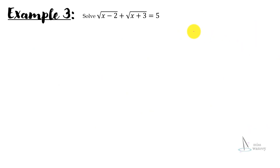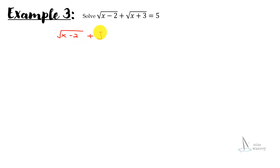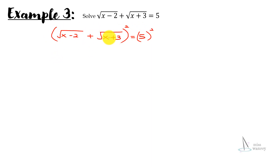Next example: solve square root of x minus 2 plus square root of x plus 3 equal to 5. Again we square both sides — the entire left-hand side inside a big bracket is squared, and the right-hand side is also squared.